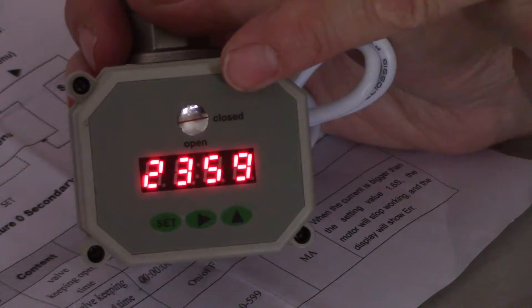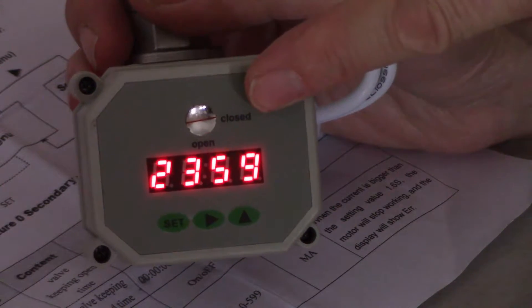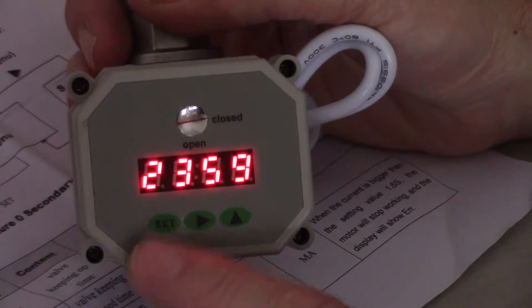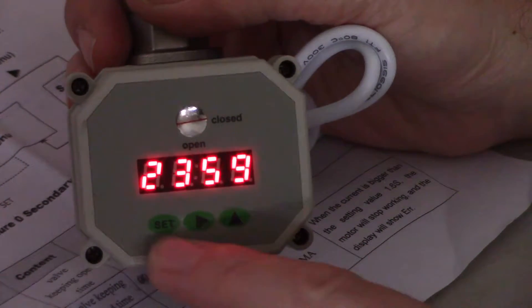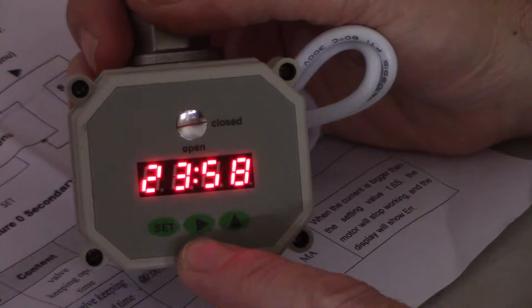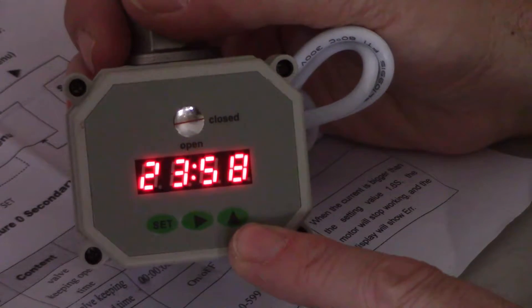There's an indicator up here with a red line that's pointing at closed right now, although you can't see it, and then there's open. There are three buttons on the bottom: the set button, the arrow pointing to the right, and the scroll up arrow.